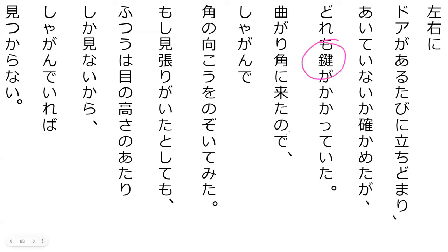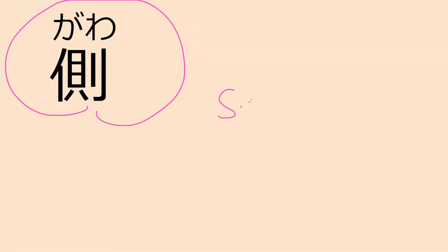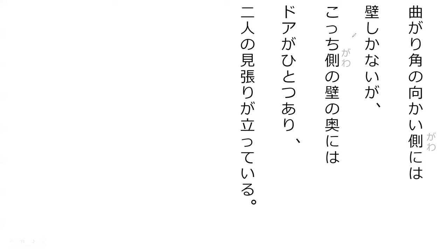Kanji check — how do you read this word? Kagi. Our next word gawa means 'side.' This same kanji can also be pronounced as soba, just so you know. But on the next page it's pronounced as gawa. I kept these in because it can be confusing whether it's soba or gawa. Let's go read this line.